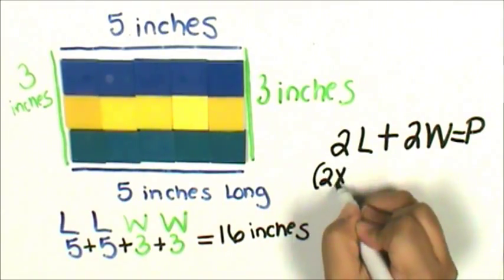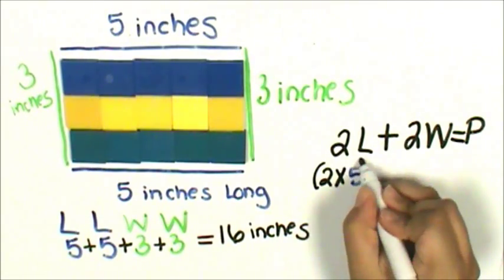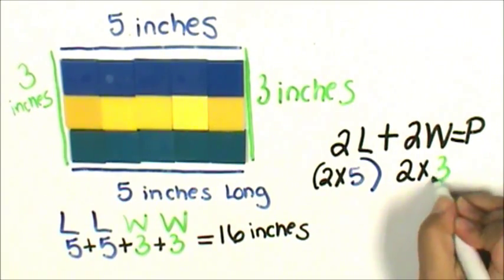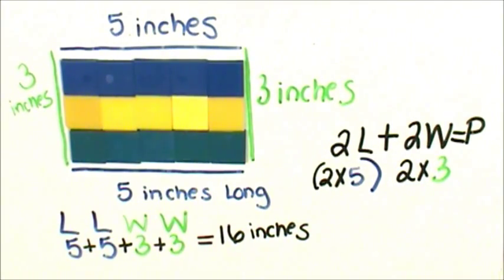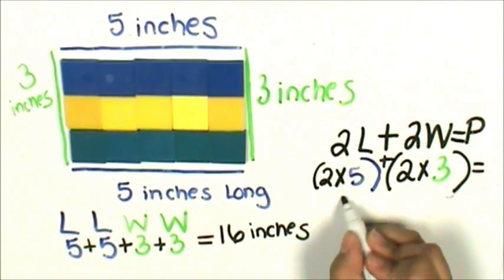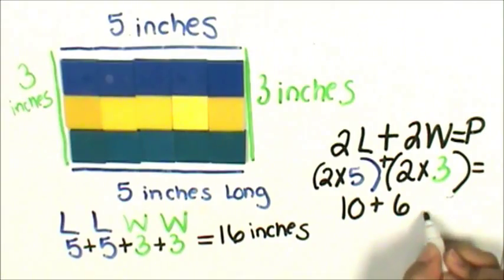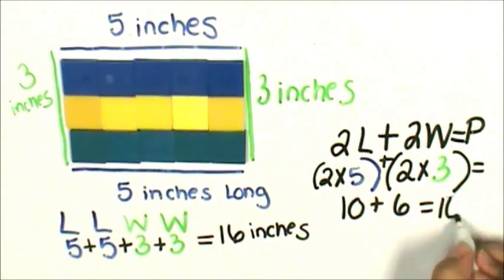2 times 5 inches, 2 times 3 inches. 2 times 5 is 10, 2 times 3 is 6, 10 plus 6 is 16.